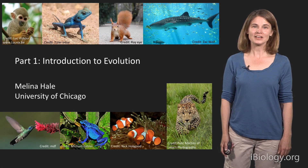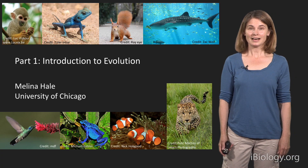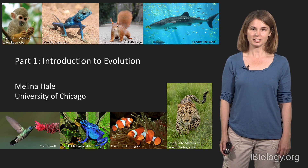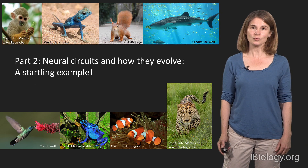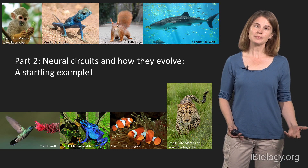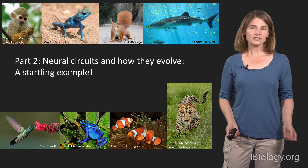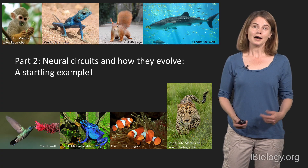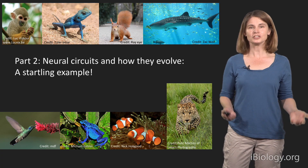Hi, my name is Melina Hale. I'm a professor at the University of Chicago. In my lab, we study neurobiology, biomechanics, and evolution. I'm going to present two different topics. The first is an introduction to evolution. Ben will go on to talk about a specific example from my lab of how we map the nervous system and aspects of the nervous system onto the evolution of animals. We work in my lab specifically on vertebrate animals, things like fish and tetrapods, mammals, and reptiles, and I'm going to focus on that part of biodiversity in my talks.